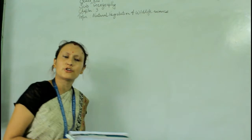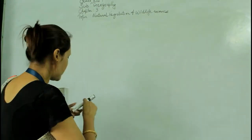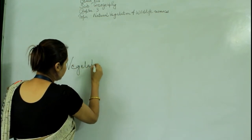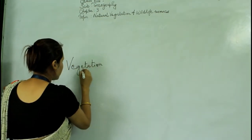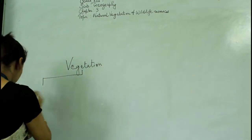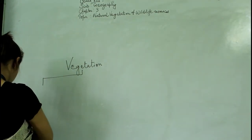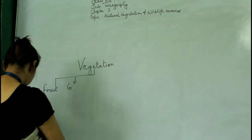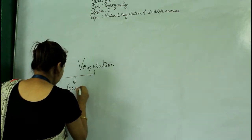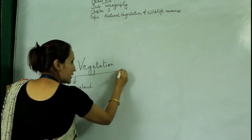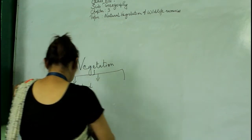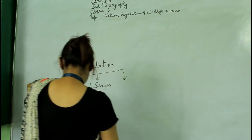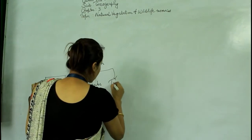Natural vegetations may be grouped into four major types. The first one is forest, then grassland, then shrubs, and the last one is tundra vegetation.